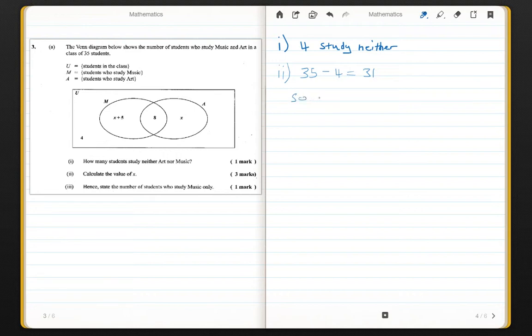This number 31 is comprised of x plus 5 plus x plus 8. x plus 5 would be those who study music only, x would be those that study art only, and 8 is those that study both. So 31 is equal to x plus 5 plus x plus 8, and now we have our equation.